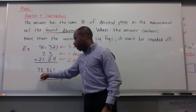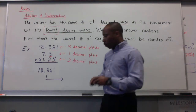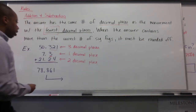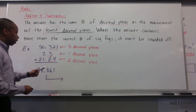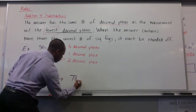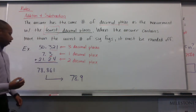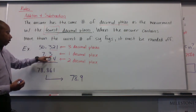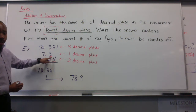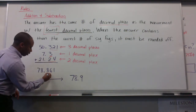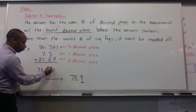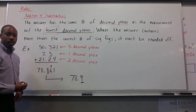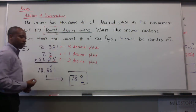If I do all this mathematics out, I get 78.861. To get my final answer accounting for significant figures, I have to round this accordingly. My final answer will be 78.9. My final answer has the same number of decimal places as the value with the fewest decimal places. I round up because 6 is higher than 5, so that becomes 9, giving me 78.9 as my final answer.